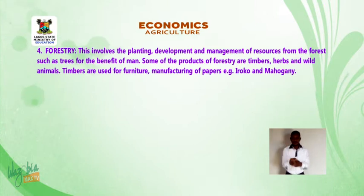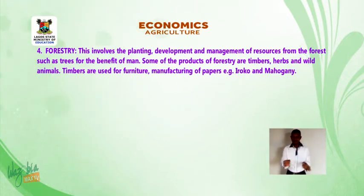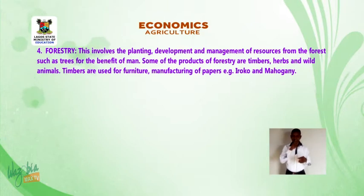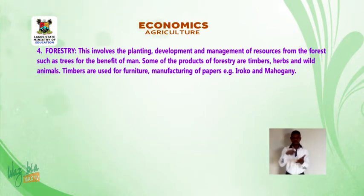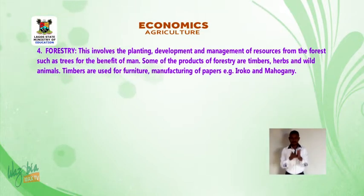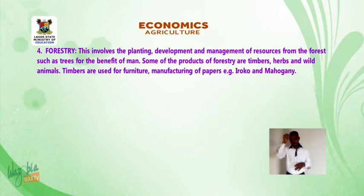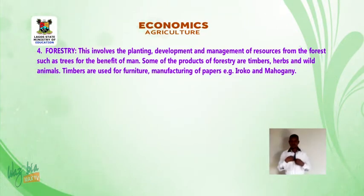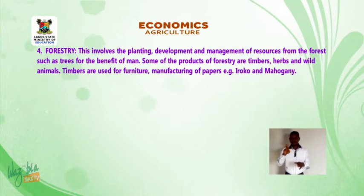Fishing is the selection, breeding, and rearing of fishes in ponds, rivers, and oceans. Under fish farming, different species of fish are reared. It is an important means of living for people living in the riverine areas such as villages. Forestry involves the planting, development, and management of resources from the forest such as trees for the benefit of man. Some of the products of forestry are timbers, herbs, and wild animals. Timbers are used for furniture and manufacturing of papers. Examples are Iroko and Mahogany.